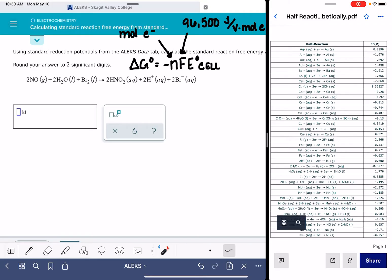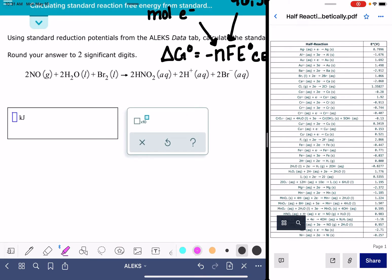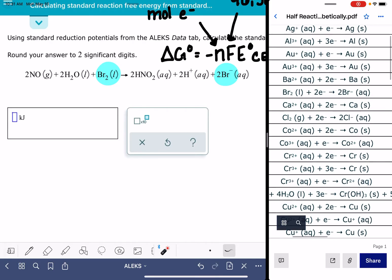So when I'm looking at this equation, I'm going to pick something to focus on. I think the thing that I'm going to pick to focus on is the bromine going to the bromide, because that's kind of the easiest one for me to pick out. And I'm going to find that in this half reaction table.